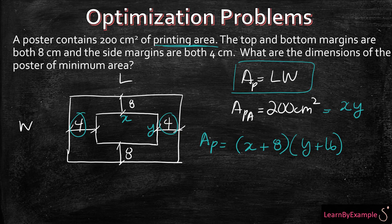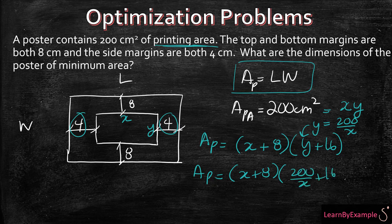So in this case, we can rearrange this to be Y is equal to 200 over X. And now we can substitute in here. So the area of the poster is going to equal X plus 8 into 200 over X plus 16.